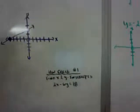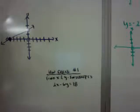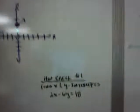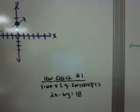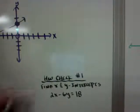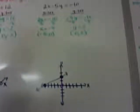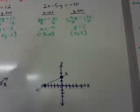Homework check number 1 is going to be right here. Find the x and y intercepts for 2x minus 6y equals 18, just like we did above, but you don't need to graph it.